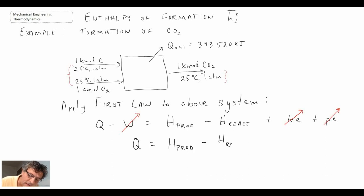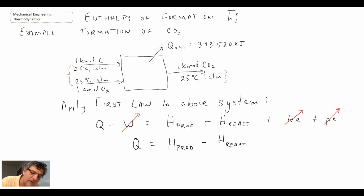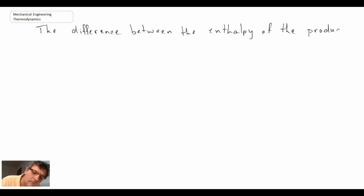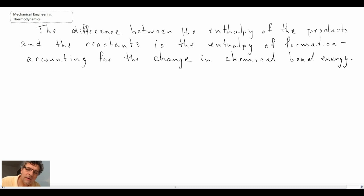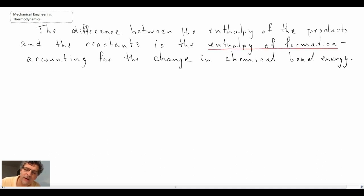Since both the products and reactants are at 25 degrees C and one atmosphere, the only thing changing in terms of enthalpy is due to the breaking or formation of chemical bonds. The only thing causing a change in enthalpy between the products and the reactants is the enthalpy of formation, which accounts for the change in chemical bond energy.